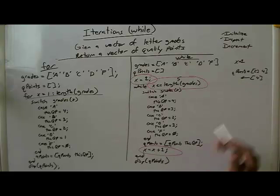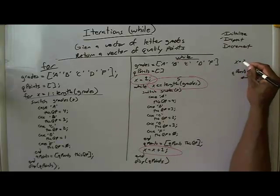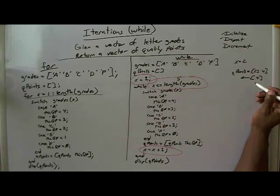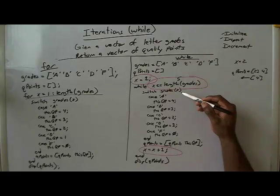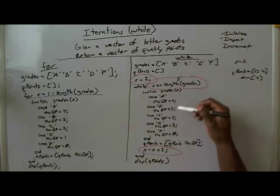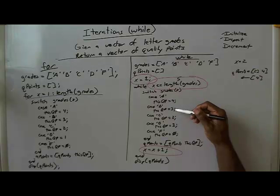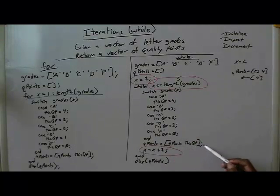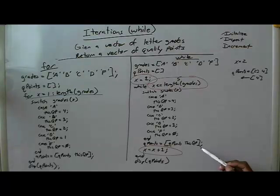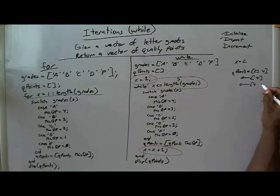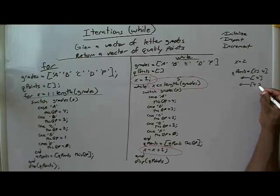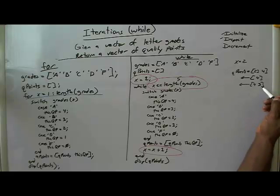We increment in our increment stage, and now X equals 2. We go back up to the top. X passes this test because 2 is less than 5. We index grades at 2, so now we're looking at B. That gives us QP equals 3. We come down to the end of our switch and do our concatenation — QPoints gets what it used to be, which is 4, concatenated with 3. Now QPoints is 4, 3.